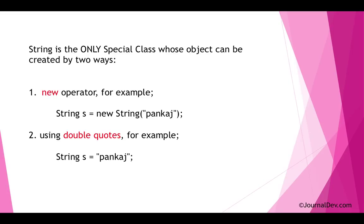First of all, it's the only class where objects can be created by two ways. First, we can use the new operator to create a string object, and then we can use double quotes to create a string object. The objects created using double quotes are also called string literals.